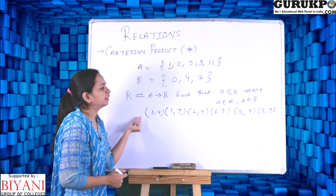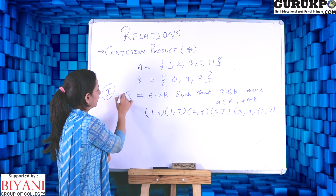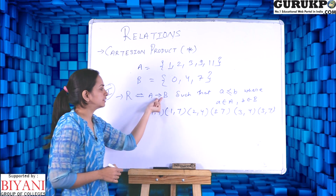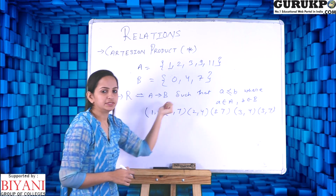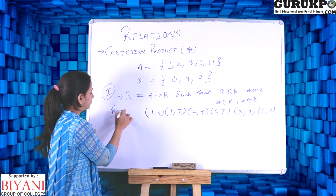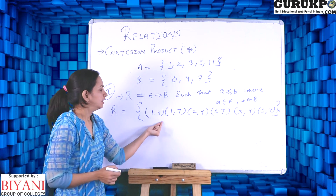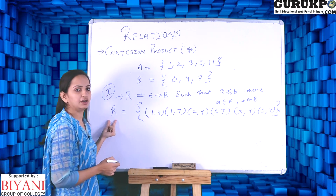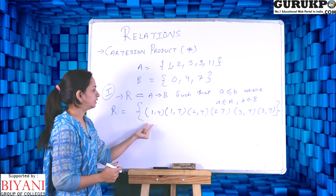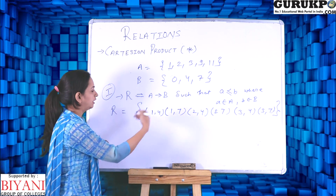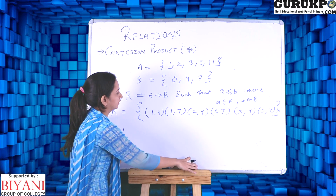Relation can be described in discrete maths in three forms. The first form is the definition form — in which we define what the relation is, which set it is given in, the condition of the relation, and the elements of the set. The second form is the set representation — we make a set R in which each element is a pair of the relation. We can also define the relation with a diagrammatic or pictorial form.